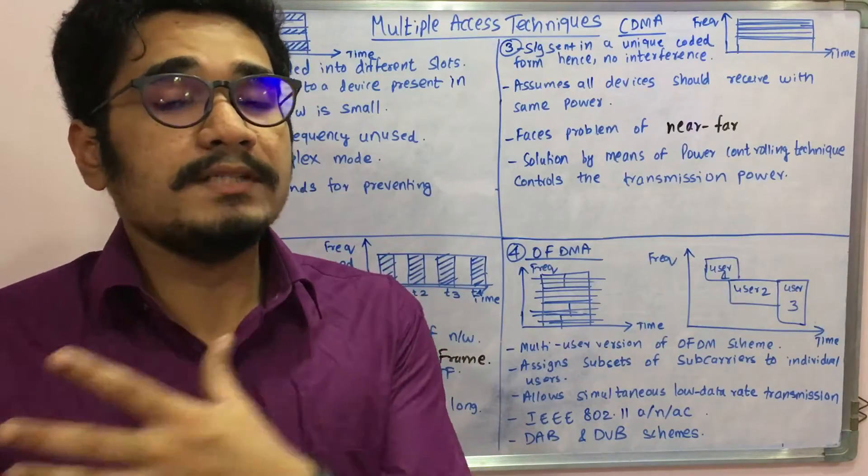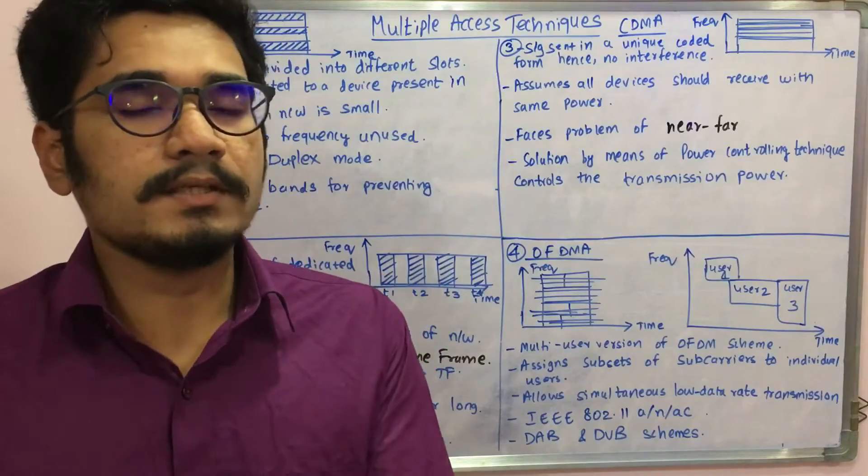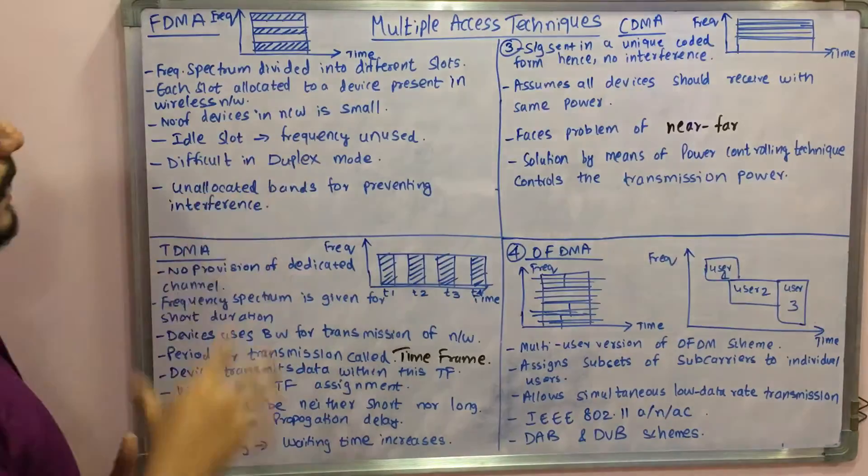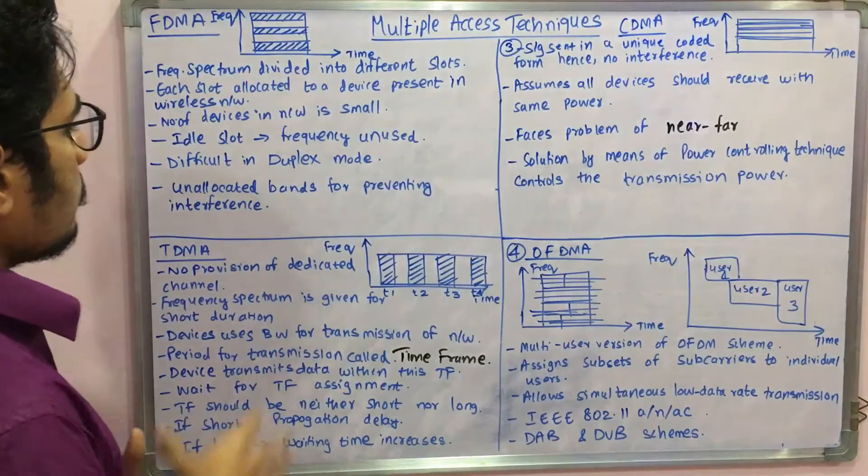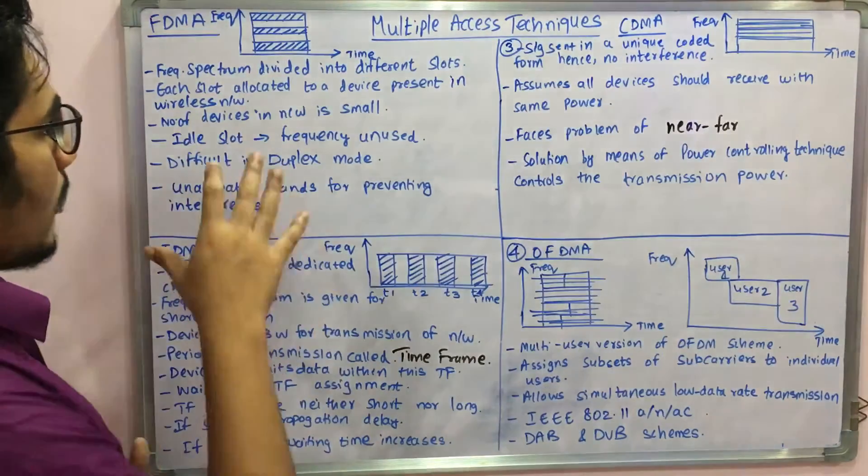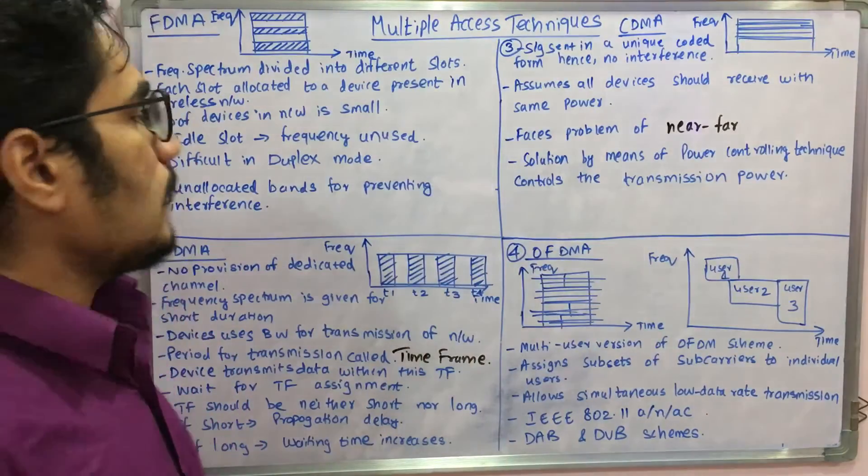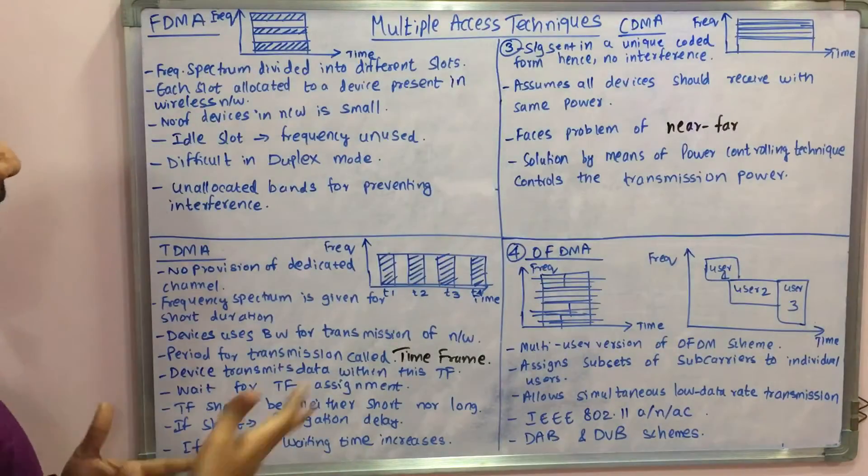If it is seen that it's not being used, then the frequency remains wasted or it goes wasted. That kind of unusability is there and it is difficult to carry out the operation in duplex mode, like from the server to receiver if there is a synchronization communication taking place.